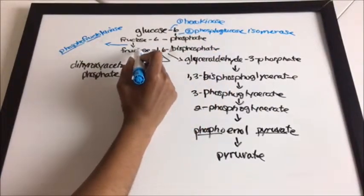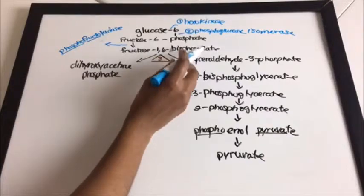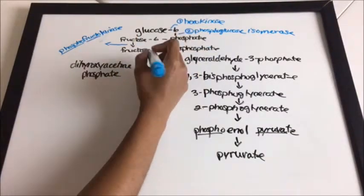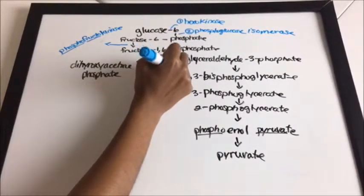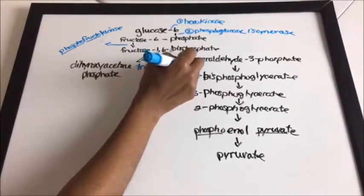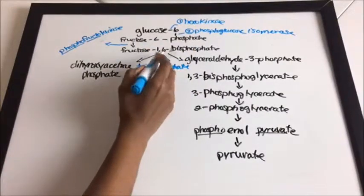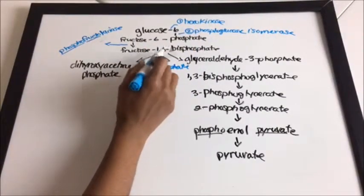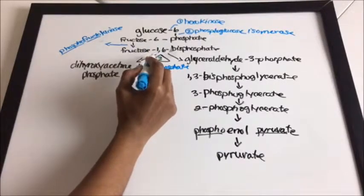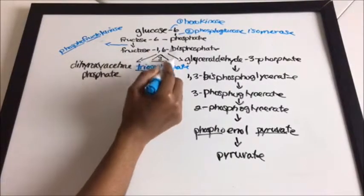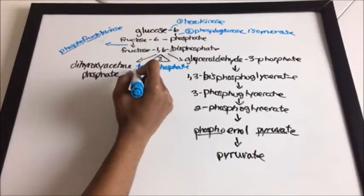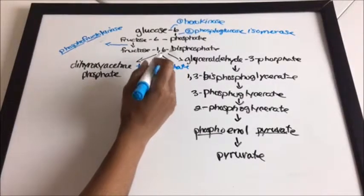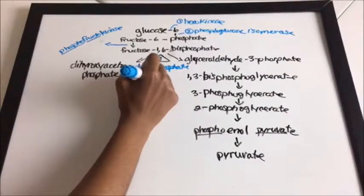The enzyme between fructose-1,6-bisphosphate and our two molecules is triose phosphate isomerase. That's why I drew the triangle with the three — to remember that there is a split and that the enzyme is triose phosphate isomerase.